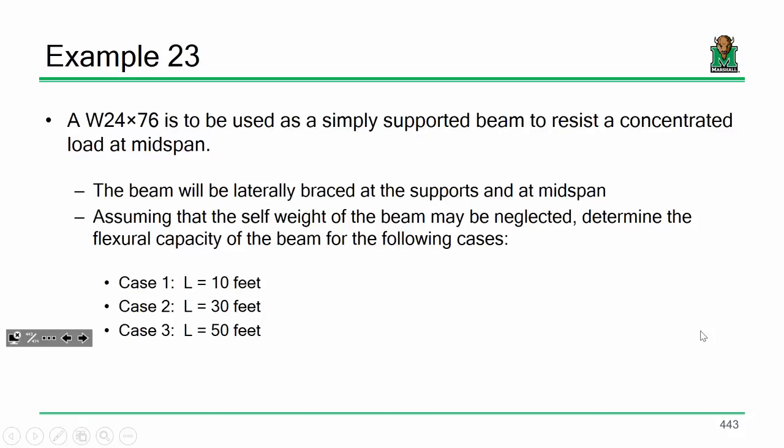Now, we're going to do this problem for three separate cases. So, case one, the beam is 10 foot long. Case two, the beam is 30 foot long. And case three, the beam is 50 foot long. We're doing this so that we can explore the variability of the different equations.